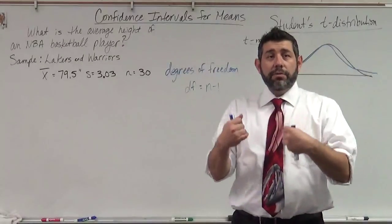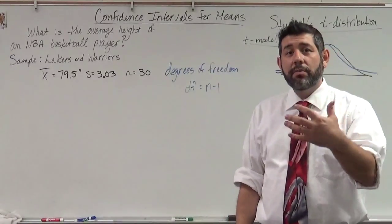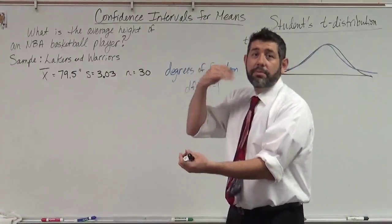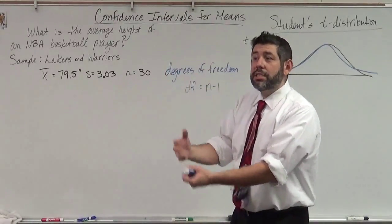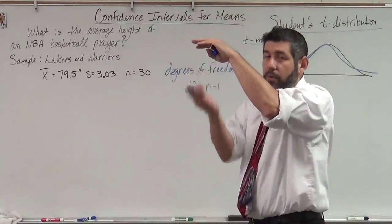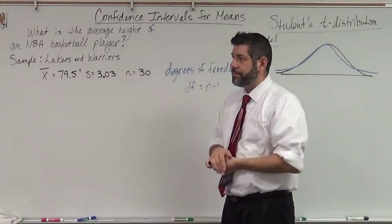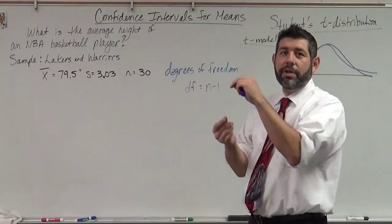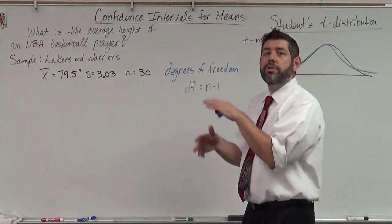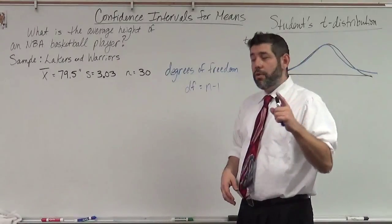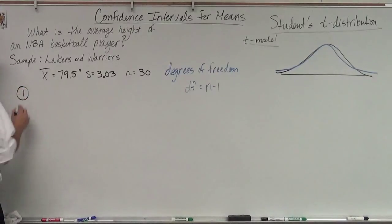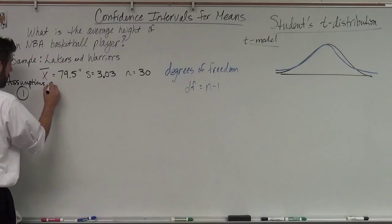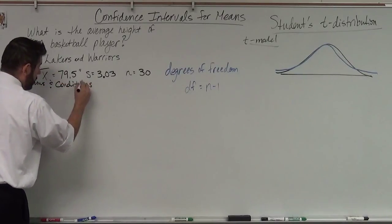In confidence intervals for proportions, we had assumptions and conditions. We needed those to tell us we could use the normal model. We've got to do the same thing for t-models. We have a set of assumptions and conditions. The first one — you know this one — is random. We have to have a random sample.